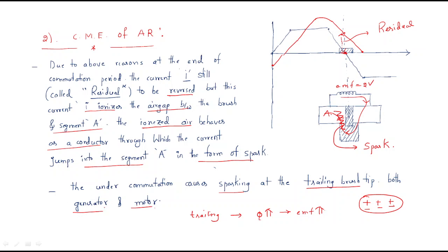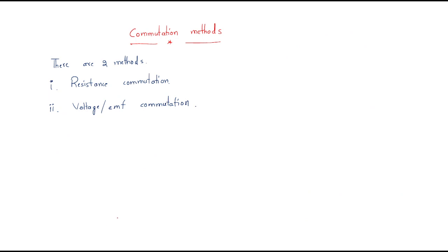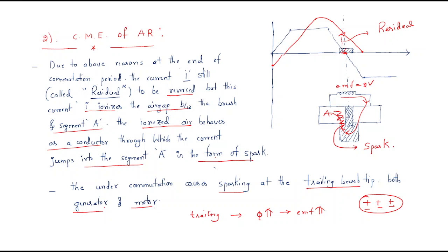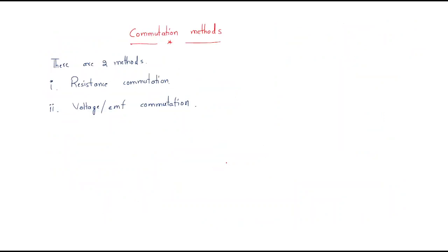In order to remove this delayed or under-commutation, we have two methods, because under-commutation affects the operation of the DC machine significantly. We need to find remedies. The two commutation methods are: first, resistance commutation; and second, voltage EMF commutation.